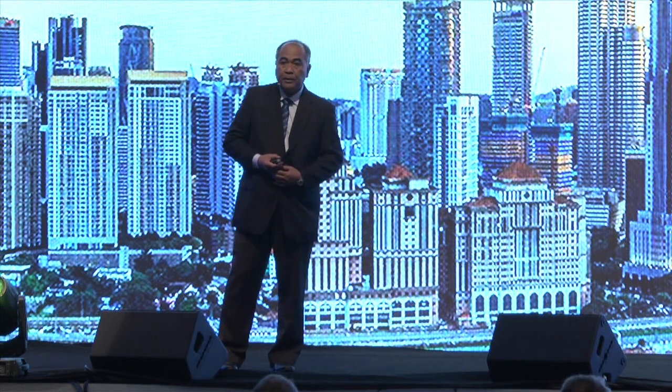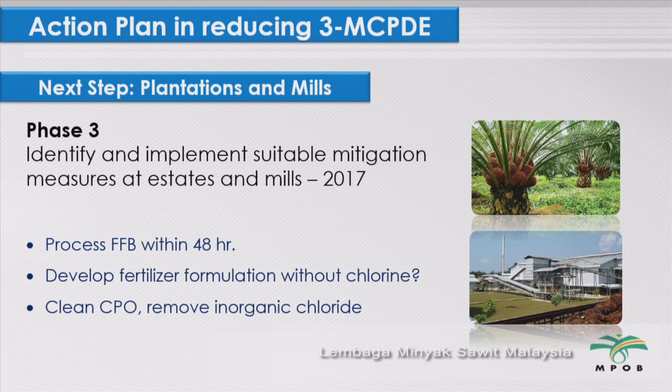Phase 3 is long term because plantation, biological, agronomy, and fertilizer research takes longer. The effect of fertilizer on plants and weather takes at least two years to observe initial plant reactions, but we need statistically proven technology. Therefore, we need longer than two years — maybe five to six years. This is also in the pipeline.